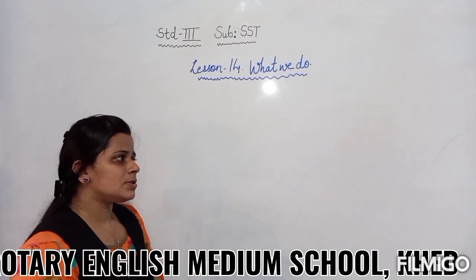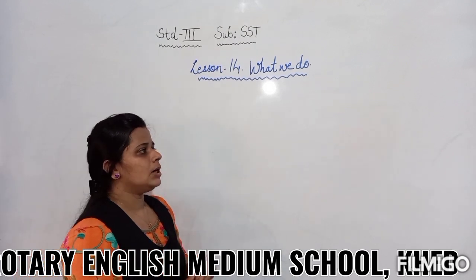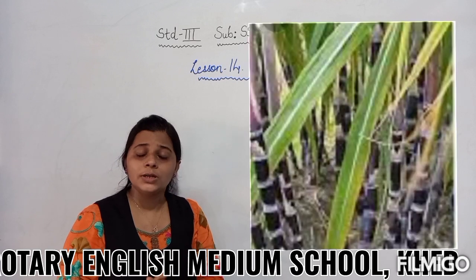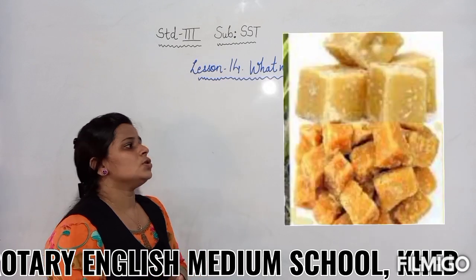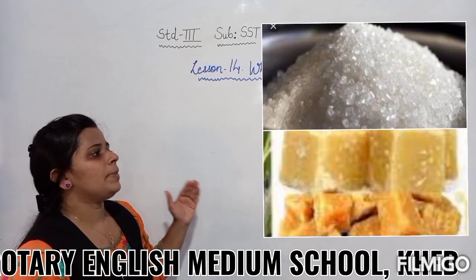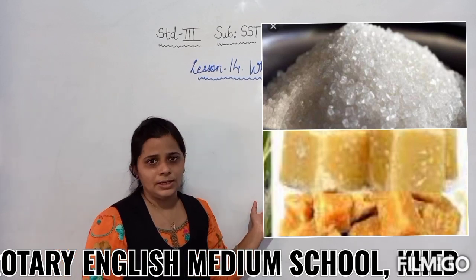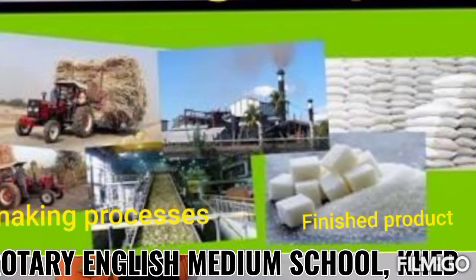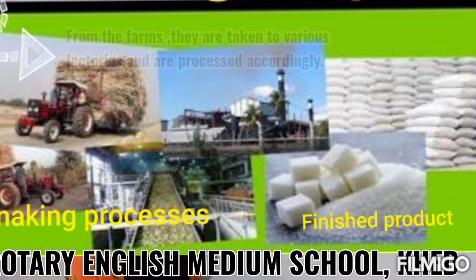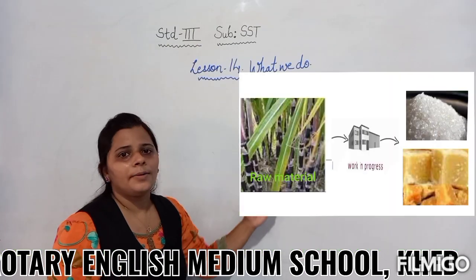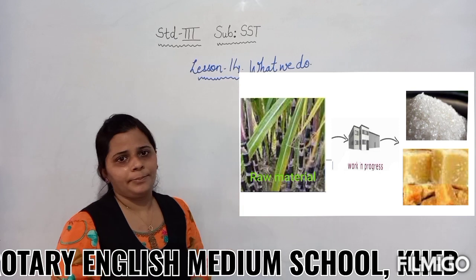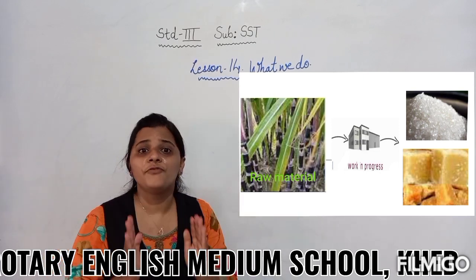For example, what is made from sugar cane? Sugar. Or jaggery. So sugar cane is a raw material. From farming, from agriculture, it is brought to the factories for the finishing process. And from the factories, sugar and jaggery are made.